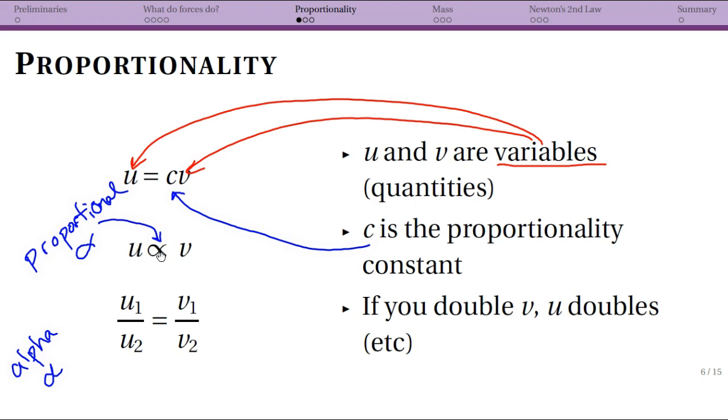So when you see this, this means that u is proportional to v and you can invert this relationship. If this is true, it is completely also true to say that v is proportional to u. So why can we say if u is proportional to v, that v is proportional to u?